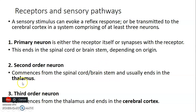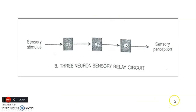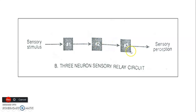So to summarize: first order neuron goes from receptor to brainstem or spinal cord. Second order neuron goes from spinal cord or brainstem to thalamus. Third order neuron goes from the thalamus to the cerebral cortex. That's basically the sensory pathway.